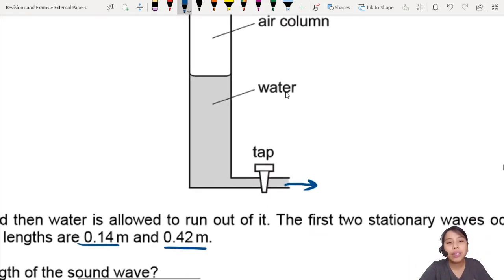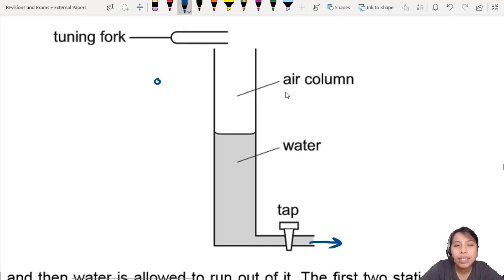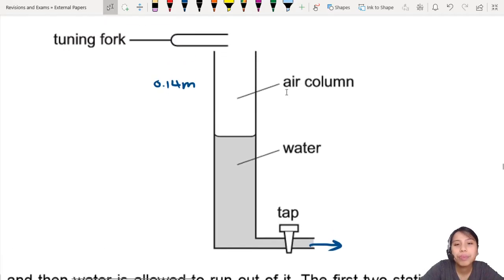let's say this level currently, and the air column is 0.14, let's just say 0.14 meters. Is it meters or cm? Oh, meters. Okay, sure. Let's say this is the current length.